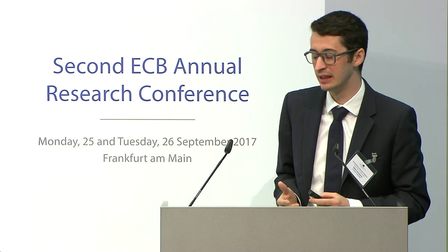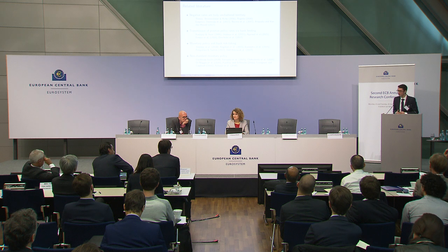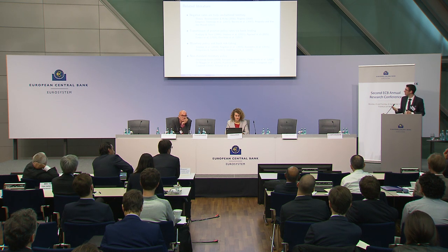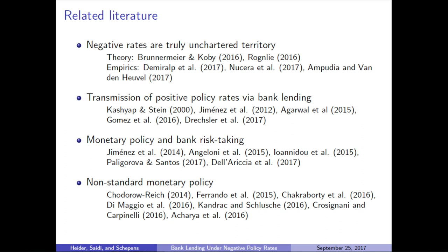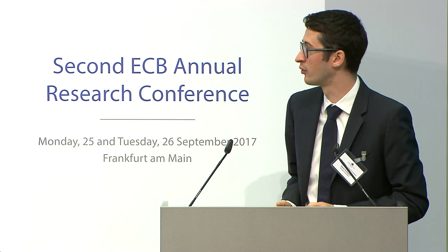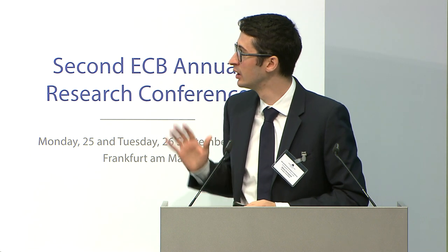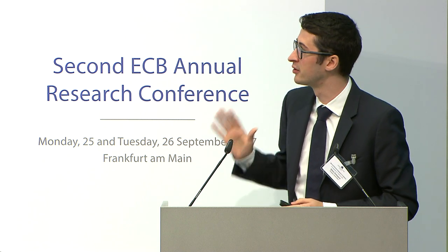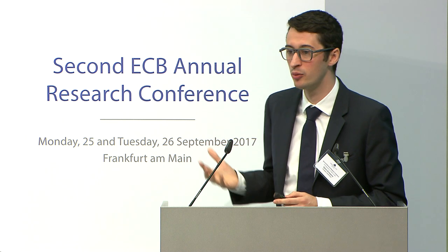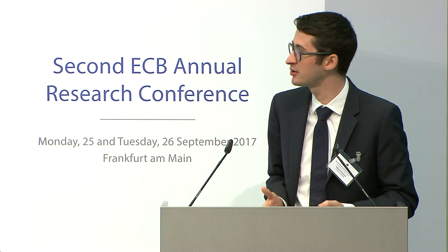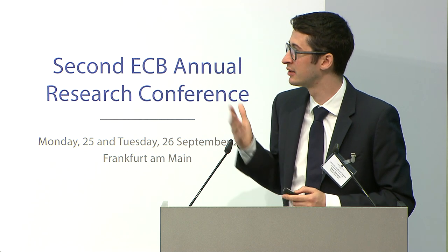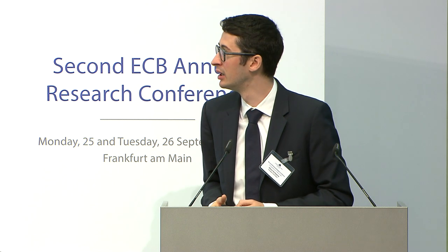Where does this place us in the existing literature? Apart from the new and quickly emerging literature on negative rates and their impact on bank lending, we're also very closely related to a longer strand of literature on the transmission of positive policy rates on both bank lending and bank risk-taking, and to a more recent strand of papers that looks at the impact of non-standard monetary policy on bank lending. For the remainder of this presentation, I'm going to first talk a bit more about the hypothesis development and the framework we have in mind, then briefly go over the data and identification issues, and then walk you through the main results.